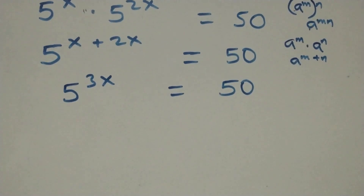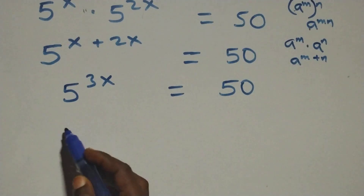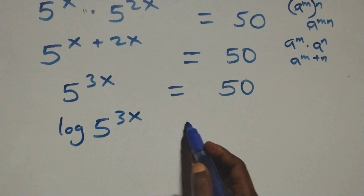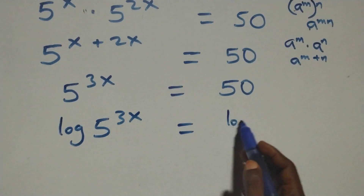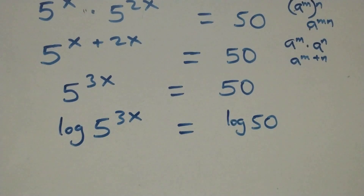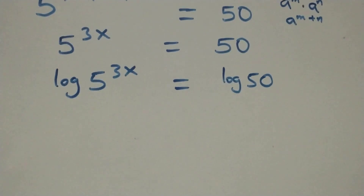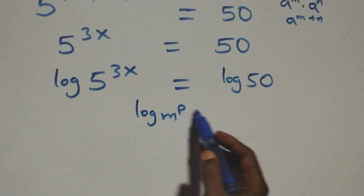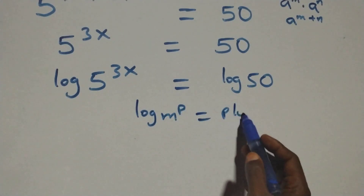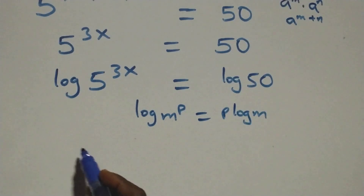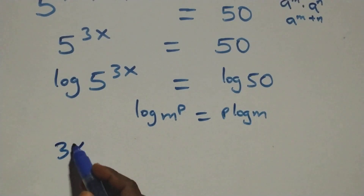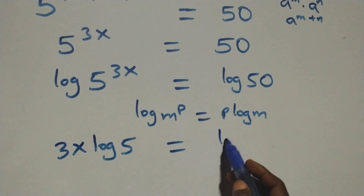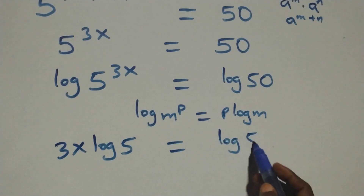The next step is to take the log on both sides. We have log of 5 raised to the power 3x equals log 50. We apply the power rule of logarithms, where log of n raised to the power p equals p times log n. So this becomes 3x log 5 equals log 50.